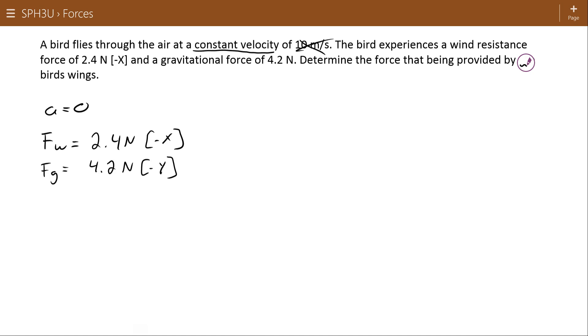And a gravitational force of 4.2 Newtons. They didn't put anything on that, but obviously we know that that's going in the negative y or the downward direction. Determine the force being provided by the bird's wings. So again, this is one of these situations. Since I have a constant velocity, I know my acceleration is zero, and so my net force has to be zero. So I've got a force of the wind resistance, a force of gravity. What force applied by the bird will allow the net force to be zero?